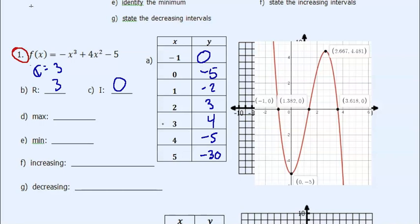Your maximum, we'll approximate it, 2.667, 4.481. And your minimum is this point, 0, negative 5.